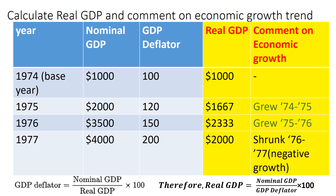Now let's see what happened between 1975 and 1976. Real GDP in 1975 was 1667; the next year it became 2333 — that's an increase. So in real terms, the economy grew. The comment would be: yes, the economy grew over the 1975–76 period.